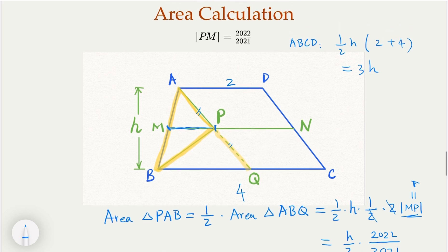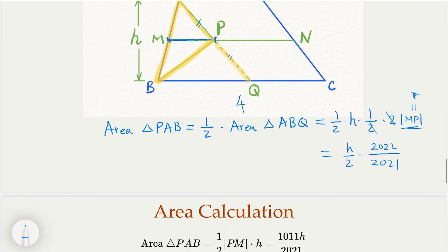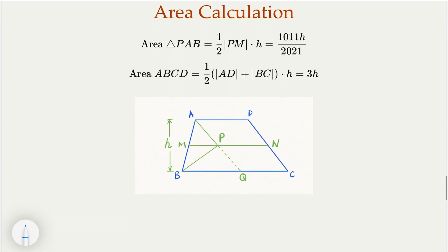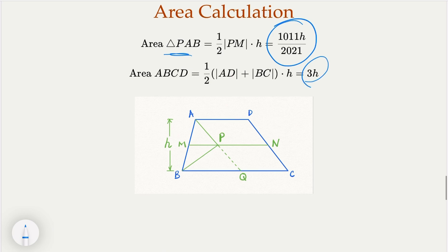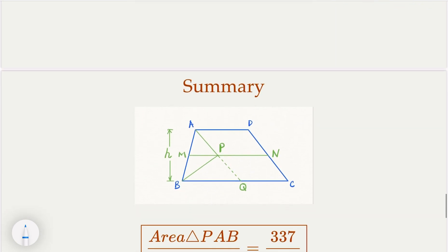So we're done. So in summary, what we have is that the triangle here is going to have an area of here, and this would be an area. The ratio, the H would cancel when we do the ratio here. 1011, 2021, divided by 3, H cancels. That's good. This is the multiple of 3. So this is 337 over 2021. That is the ratio of the triangle versus the trapezoid.